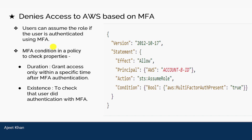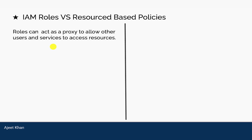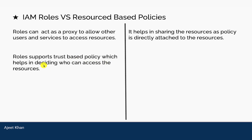Now let's discuss the difference between IAM roles versus resource-based policies. IAM roles can be applied to users or groups, while resource-based policies — for example, a bucket policy or SQS policy — are applied directly to S3 or SQS resources. Roles act as a proxy to allow other users and services to access resources, while resource-based policies share the resource via a policy directly attached to the resource itself, not to any user. Roles support trust-based policies that decide who can access the resource.